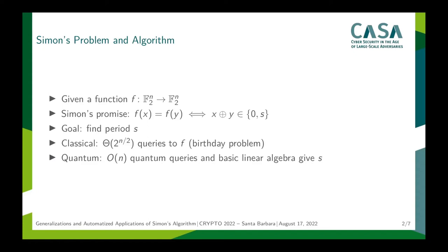First of all, I want to give you a quick reminder on Simon's Quantum Algorithm, which solves a problem called Simon's Problem. For Simon's Problem, we are given a function f that maps n bits to n bits and we are promised that f has a unique period s. That means that f of x is equal to f of y if and only if x XOR y is either 0 or the secret period s. Our goal is to find s.